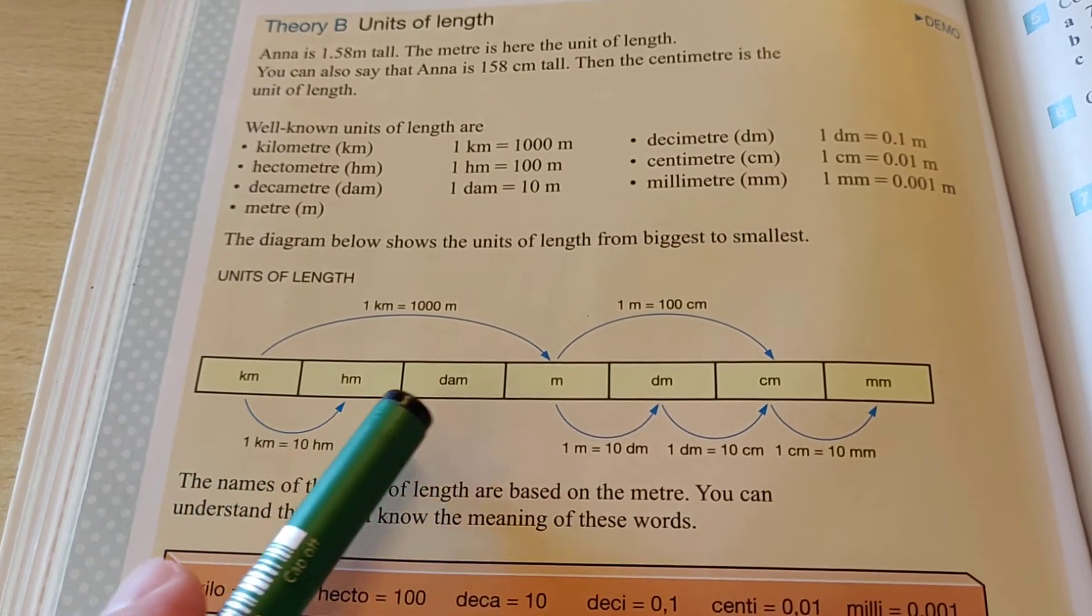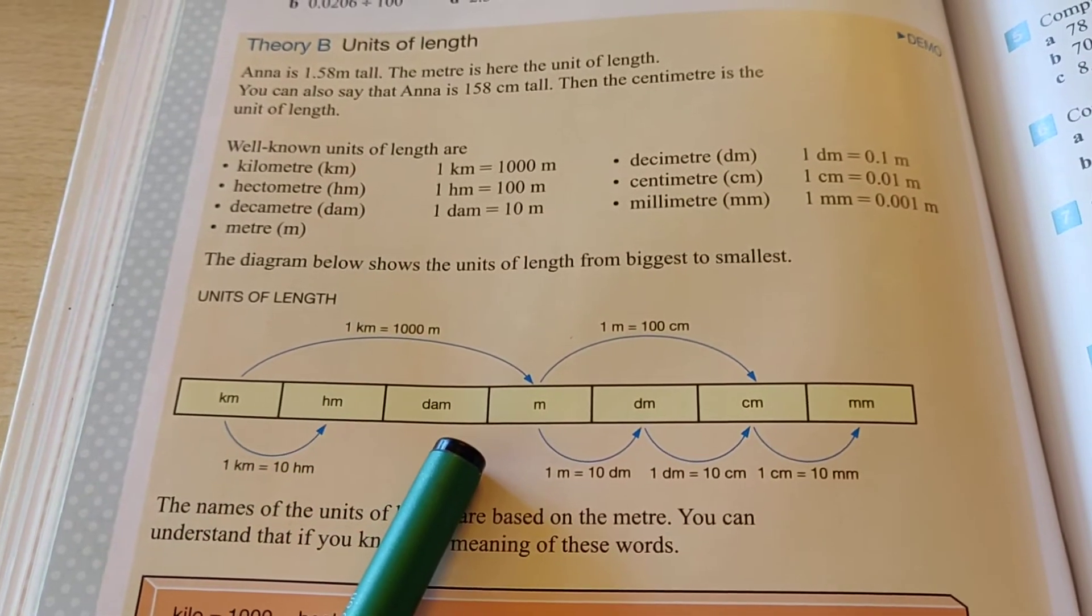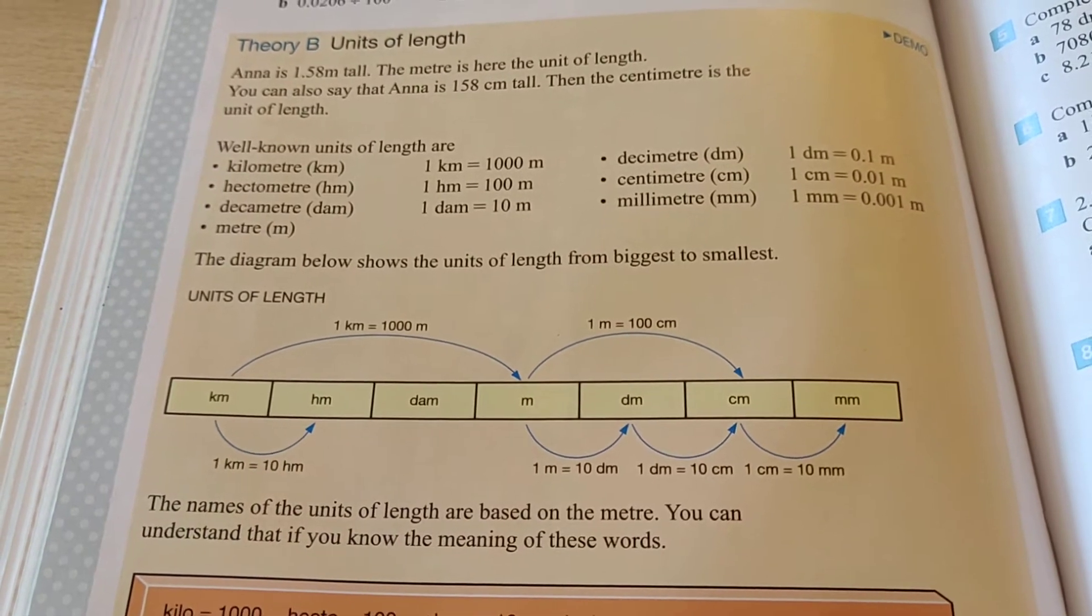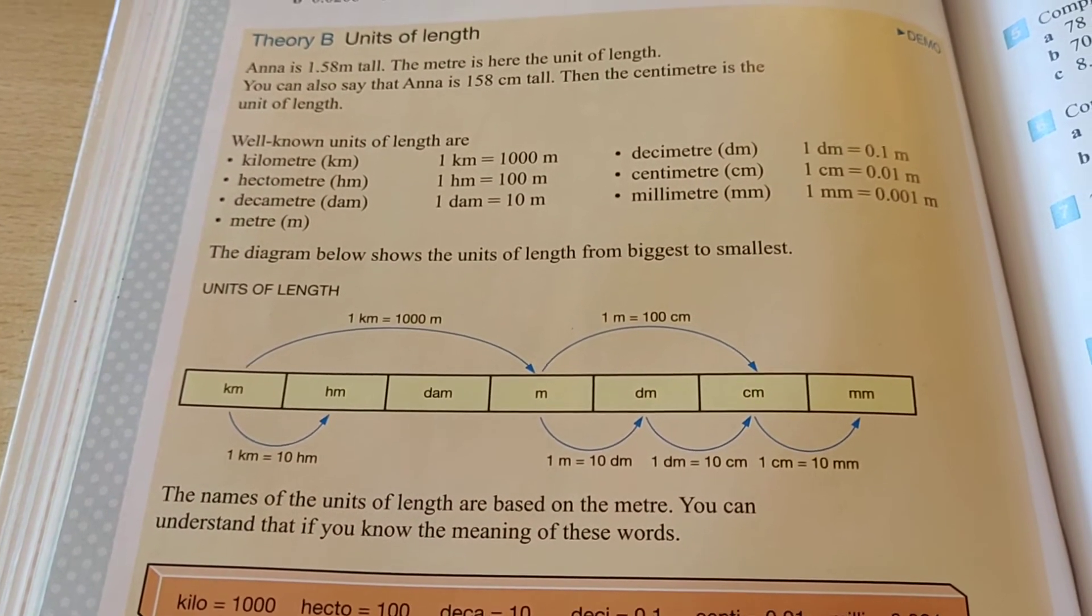It says all the measurements that we have for lengths. And if you go from one to another, you have to do it times 10, or if you go the other way around, you have to do divided by 10 to translate it from one measurement to another one.